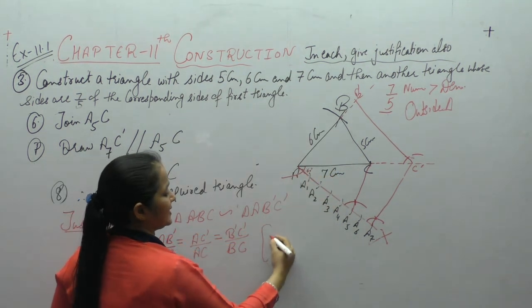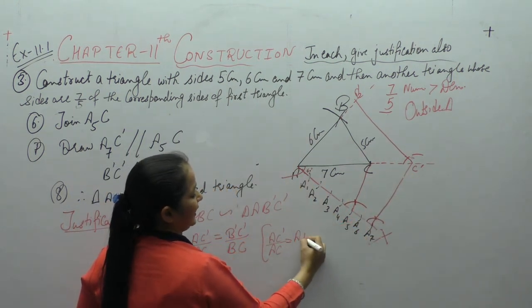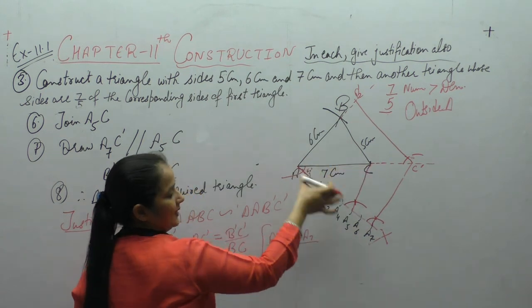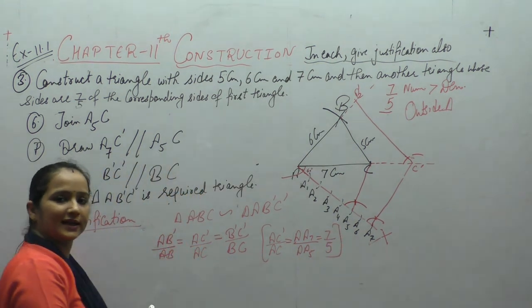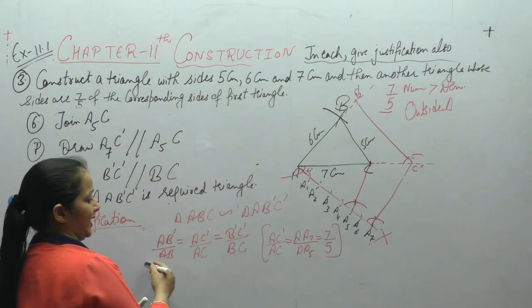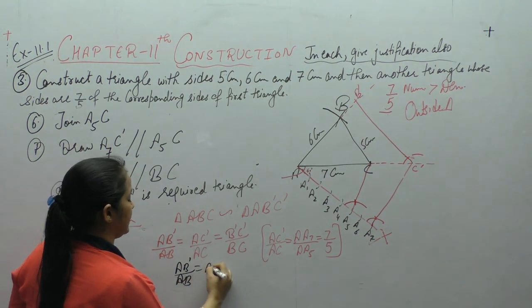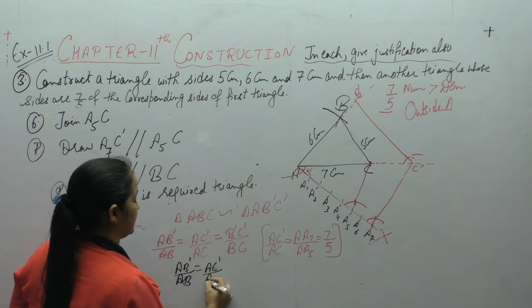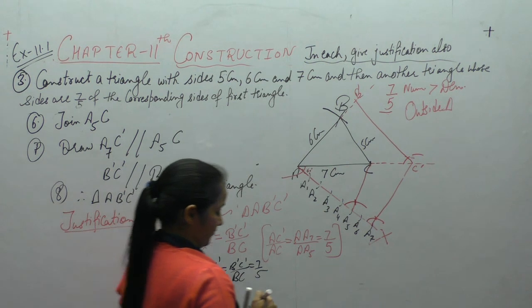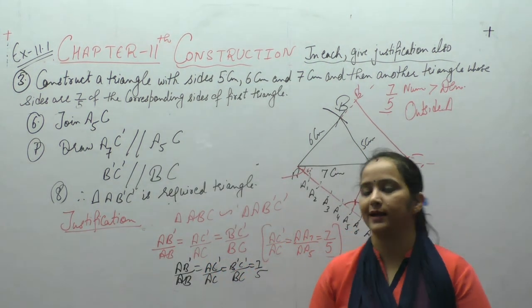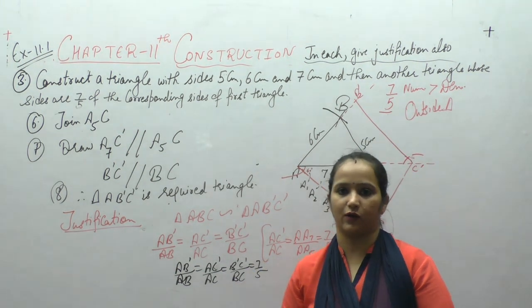अब अगर हम देखें, AC' upon AC किसके equal है — AA7 upon AA5, और यह हमारे पास seven ratio five है। अगर AC'/AC = 7/5 है, तो यह तीनों sides equal हैं — AB'/AB = AC'/AC = B'C'/BC = 7/5. तो जो हमारे पास required triangle आई है, उसकी sides given triangle की sides की 7/5 corresponding ratios हैं। Clear.